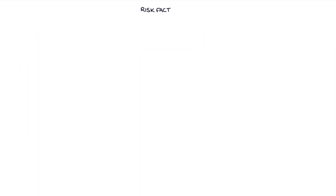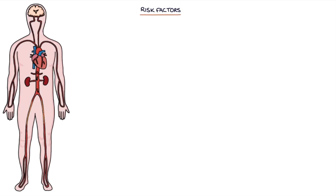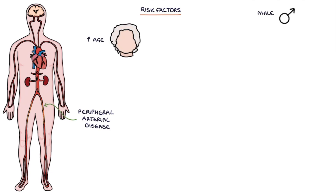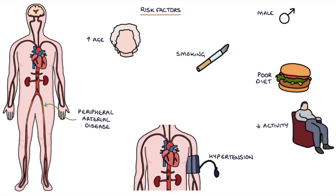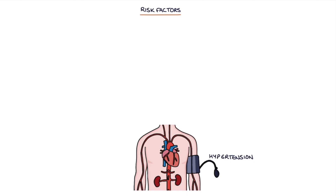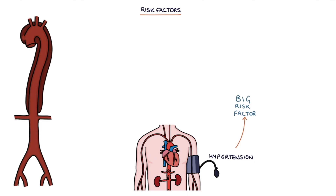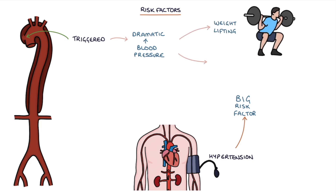Let's talk about the risk factors. Aortic dissection shares the same risk factors as peripheral arterial disease, such as age, male sex, smoking, hypertension, poor diet, reduced physical activity, and raised cholesterol. Hypertension is a particularly big risk factor. Dissection can be triggered by events that temporarily cause a dramatic increase in blood pressure, such as heavy weight lifting or the use of cocaine.